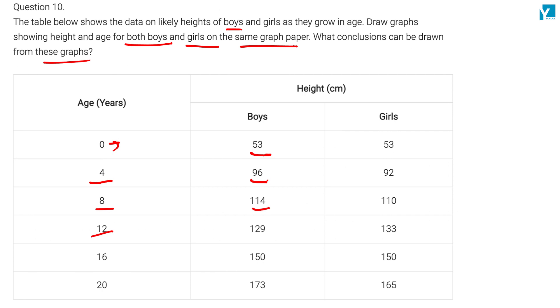Looking at the data for girls and boys: at 20 years of age, boys reach 173 cm and girls reach 165 cm.